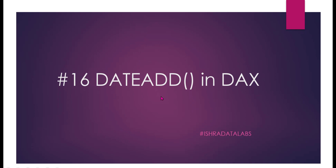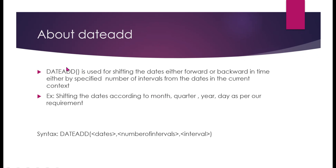DATEADD is used for shifting dates either forward or backward in time by a specific number of intervals from dates in the current context. For example, you can shift dates by month, quarter, year, or day as per your requirement.